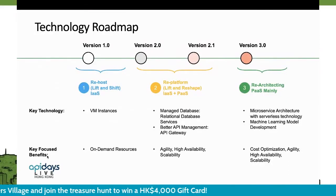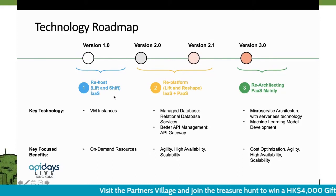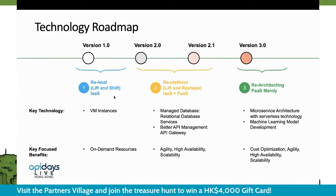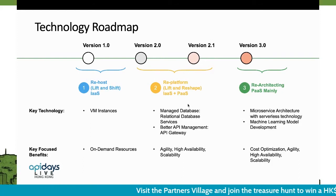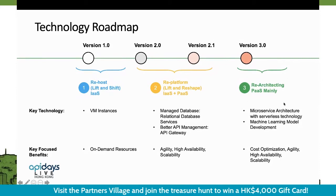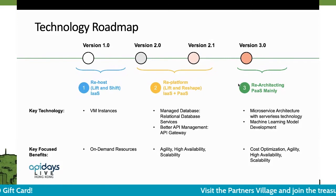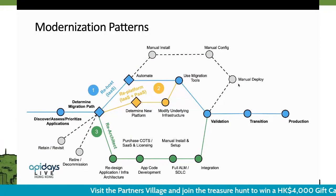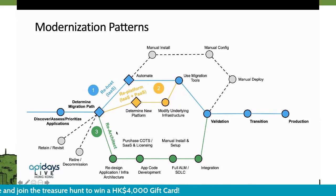Here's the technology roadmap. We have released several versions from version one to version three using different approaches. Version 1.0 is a defensive model — we start the migration from on-premises to the cloud, a rehosting approach. The second approach uses the web platform, trying to leverage more managed services and PaaS services. The last one is rearchitecting the model, leveraging more PaaS technology like serverless technology. So the three modernization patterns are rehosting, replatforming, and rearchitecting.